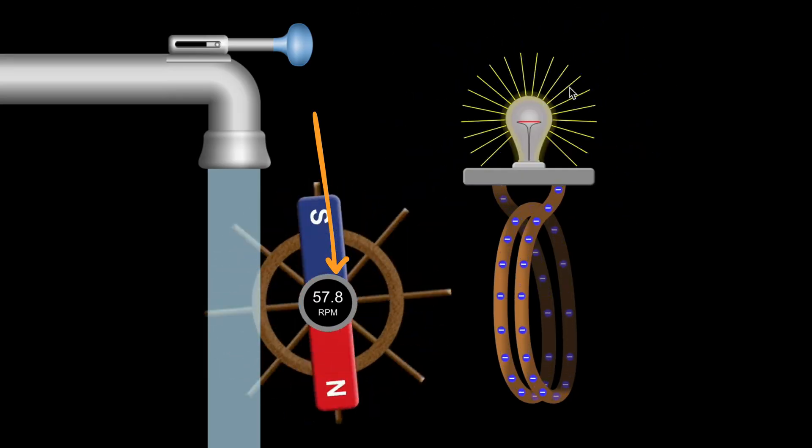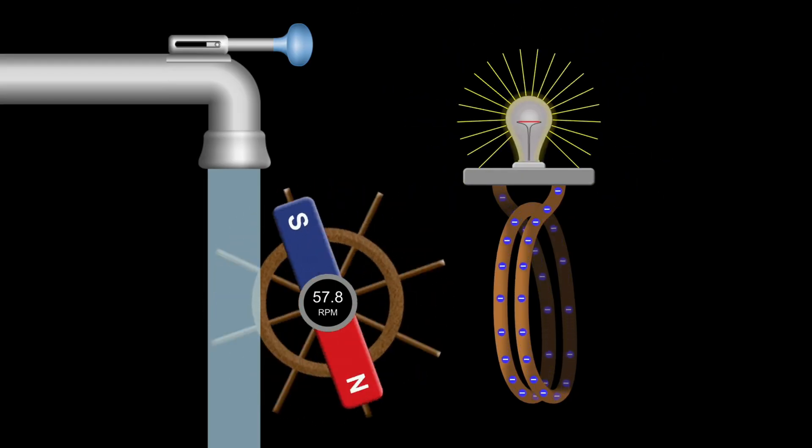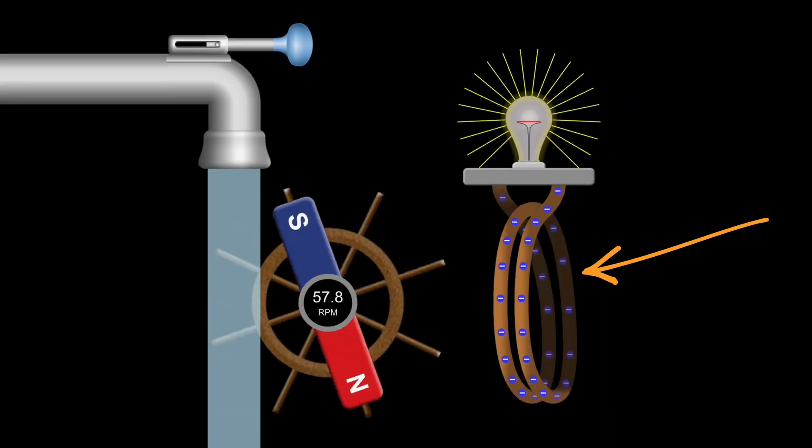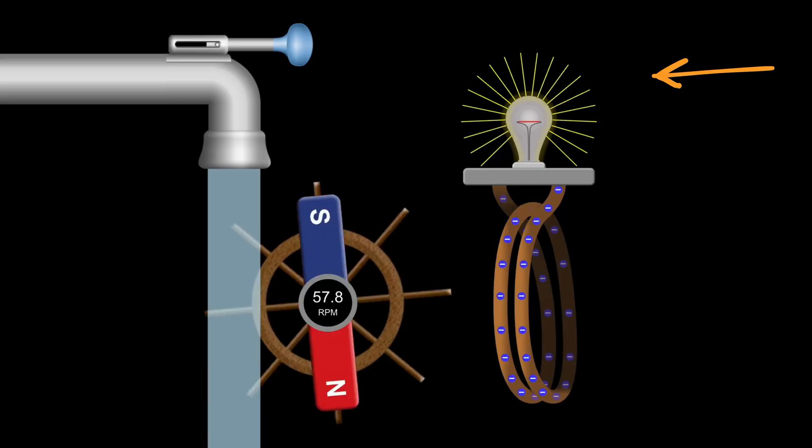As the magnet spins, it creates a changing magnetic field, and this field passes through the coil of wire on the right side. What do we see next? The bulb lights up without any battery.